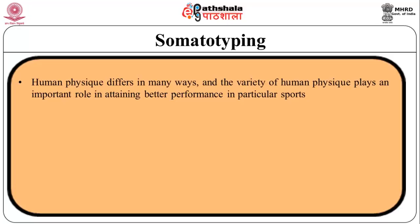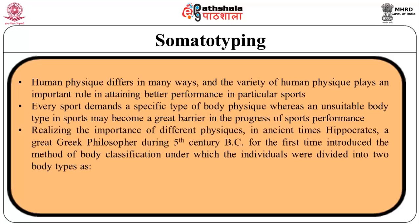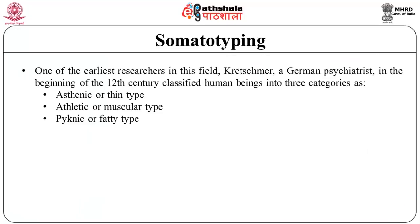Now we will move to somatotyping, which is an important component of kinanthropometry. Human physique differs in many ways and the variety of human physique plays an important role in attaining better performance in particular sports. Every sport demands a specific type of body physique, whereas an unsuitable body type may become a great barrier to sports performance. Realizing the importance of different physiques in ancient times, Hippocrates, a great Greek philosopher during the 5th century BC, was the first to introduce the method of body classification, dividing individuals into two body types: Habitus Phthisicus, having thin and lean body with long extremities, and Habitus Apoplecticus, having short, thick and massive body.